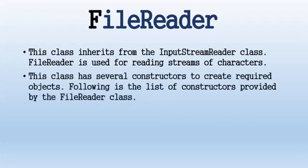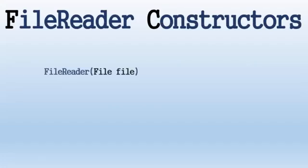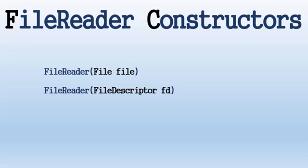This class has several constructors to create the required objects. The first constructor creates a new FileReader given the file to read from. The second constructor creates a new FileReader given the file descriptor to read from. The third constructor creates a new FileReader given the name of the file to read from.